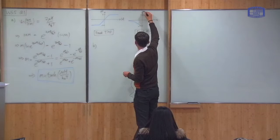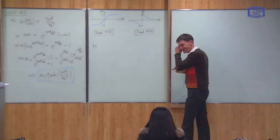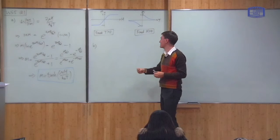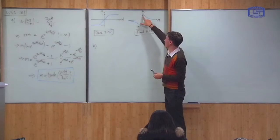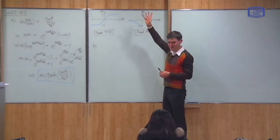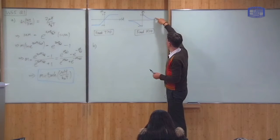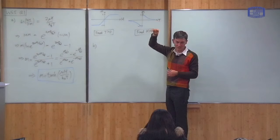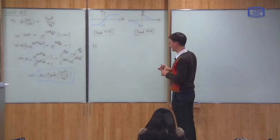To clarify: the first graph is magnetization as a function of field; the second is magnetization as a function of temperature. At temperature equals zero, the magnetization is one — you're in the ground state. As the temperature goes to infinity, the magnetization tends to zero, meaning the system is completely disordered.